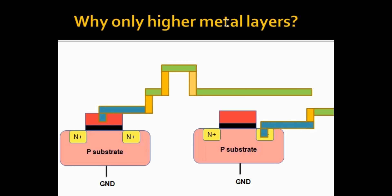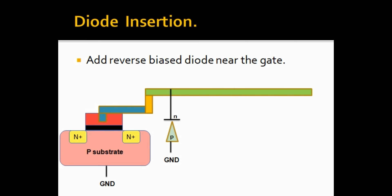This is why we use only higher metal layers and not lower metal layers for the jumper. If we used Metal 2 instead of Metal 4 to make the jumper, since the violation is in Metal 3, Metal 2 would already be fabricated and the long wire would still have a path to discharge through the gate, still damaging the gate oxide. Higher metal layers work because they haven't been fabricated yet at the time when the violation would occur.